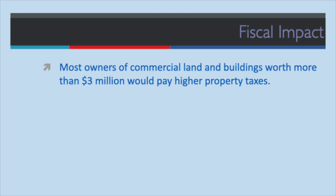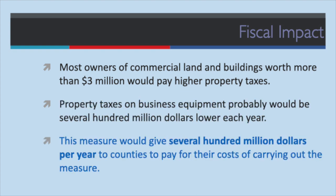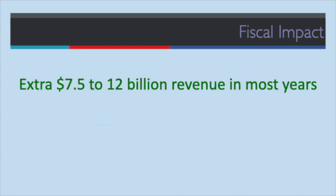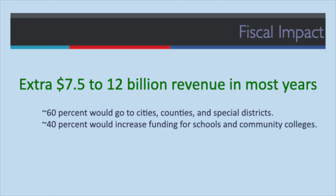Fiscal impact: most owners of commercial land and buildings worth more than $3 million would pay higher property taxes. Property taxes on business equipment would be several hundred million dollars lower each year — a decrease in revenue. This measure would give several hundred million dollars per year to counties to pay for their costs of carrying out the measure. Beyond that, Prop 15 would add up to $7.5 to $12 billion in tax revenue in most years, depending on the real estate market. Sixty percent would go to cities, counties, and special districts; the other 40 percent to schools and community colleges.